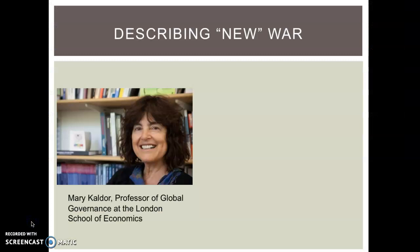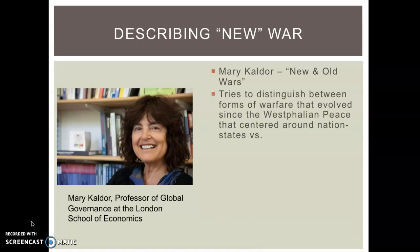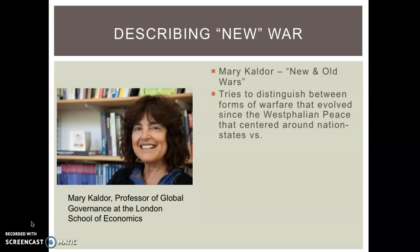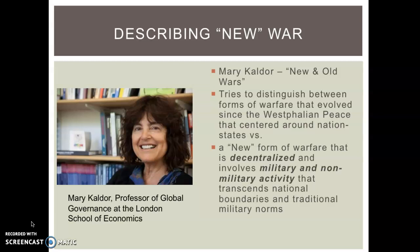Next we're going to do a reading from British professor Mary Caldor, from her book 'New and Old Wars.' She develops a theoretical way of describing the difference in conflict today compared to the 20th century and before. She argues that the Westphalian peace that created nation states produced a particular kind of conflict, and that today conflict is mostly decentralized. While large nation states still conduct military operations, conflict now involves non-governmental organizations, multinational corporations, and globalized interests that transcend traditional boundaries and norms of old-style warfare.